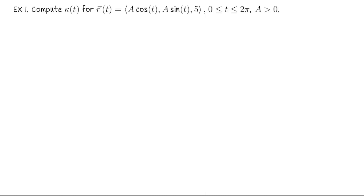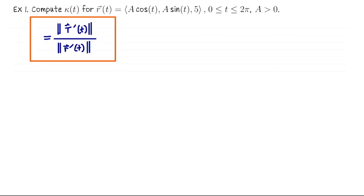Let's compute the curvature function for the parametric curve r of t equals (a cosine t, a sine t, 5) for t from 0 to 2π, with some positive number a. This is a circle of radius a in the plane z equals 5. I'm using capital A for the radius since I'm already using r for the curve. I'll use the first formula — finding t-hat, t-hat-prime, and the speed.